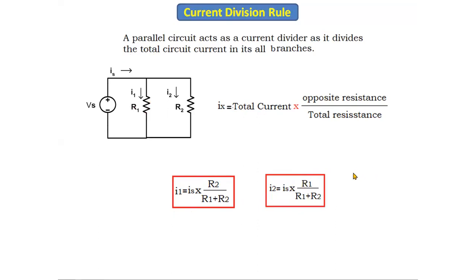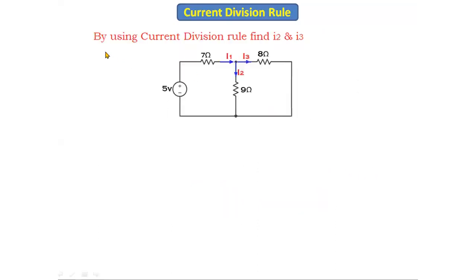Now let's solve an example problem using the current division rule. We need to find i2 and i3. The circuit has one voltage source and three resistors: a 7-ohm resistor in series, and an 8-ohm and 9-ohm resistor. i1 is the total current, which then divides into two parts, i2 and i3. For this problem we will use the current division rule.